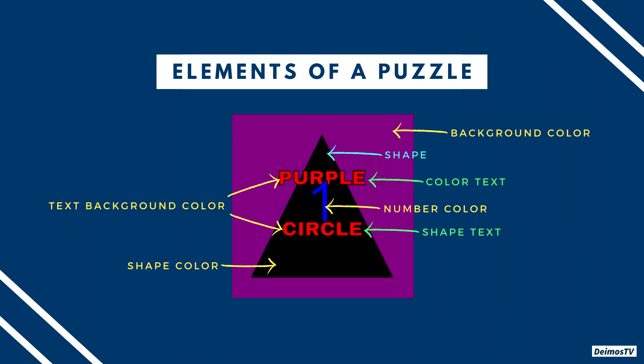Now let's try to identify each of the elements shown on this puzzle. For the shape it's a triangle, color text is purple, shape text is circle, background color is purple, text background color is red, number color is blue, and shape color is black.